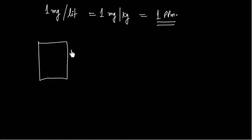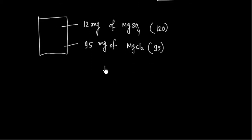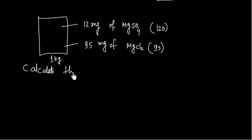Now let us solve a problem. We have 1 kg of hard water containing 12 mg of MgSO₄ and 95 mg of MgCl₂. The molecular weight of MgCl₂ is 95 g/mol and of MgSO₄ is 120 g/mol. We need to calculate the degree of hardness in PPM.